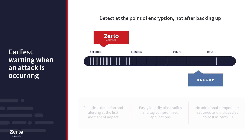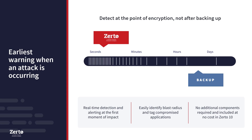From the first moment of impact, administrators can easily identify the blast radius. Zerto sends an alert which identifies specific groups of impacted VMs or applications. So if a certain set of VMs or applications are infected but others are not, you'll be able to only recover those that are impacted. You don't have to restore all or nothing.